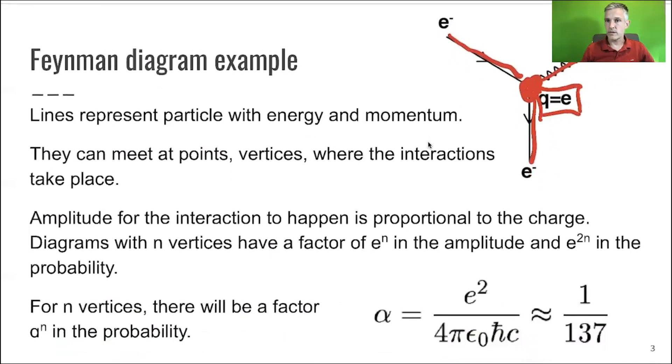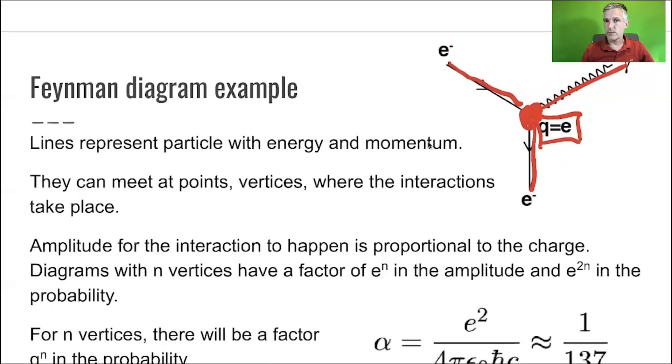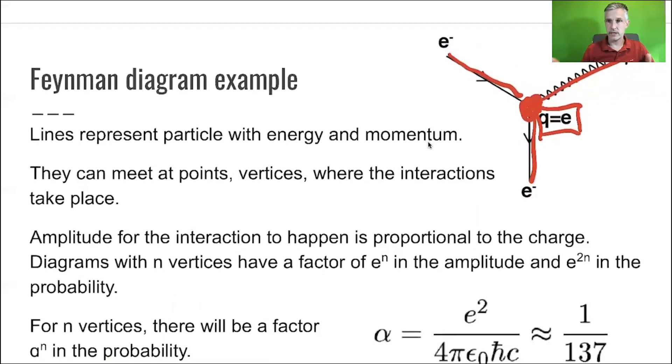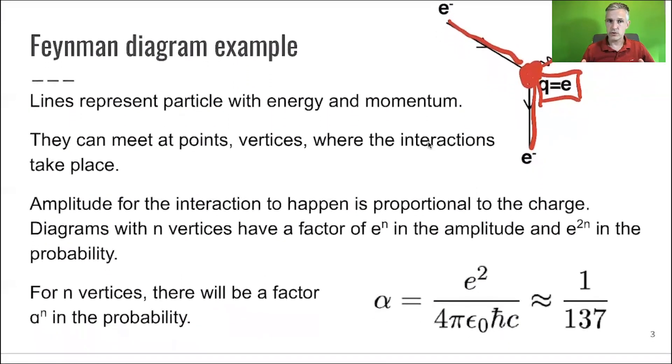And this is where the interaction takes place. And in this example, the vertex is labeled with a Q or e, representing the charge, the electric charge, which gives us the strength of the coupling. We already discussed when we talked about units that we can express the strength of the electromagnetic coupling in QED with the electric charge. And that's shown below.